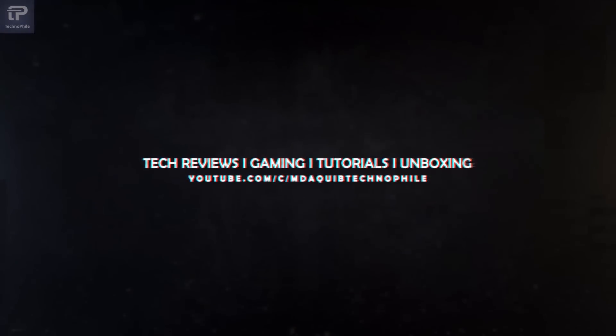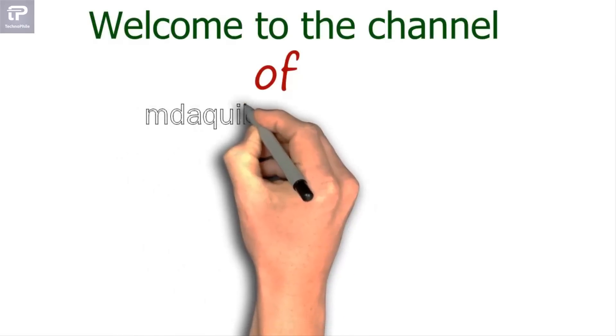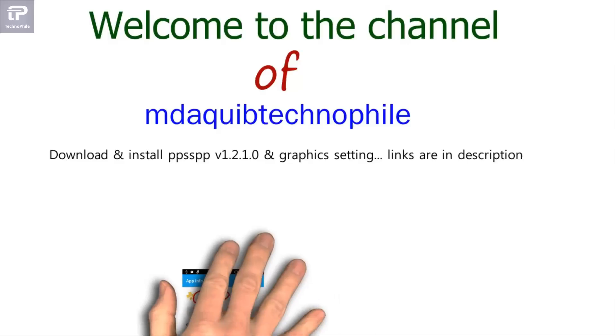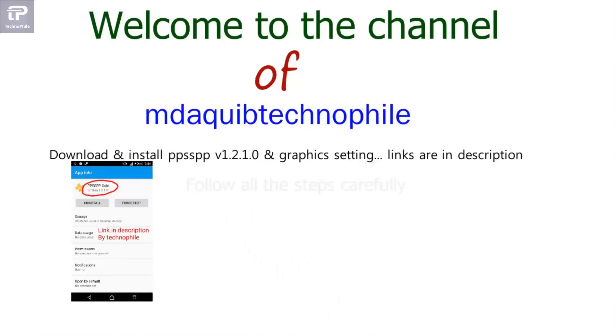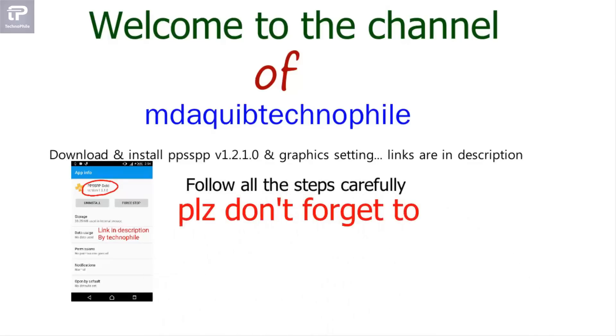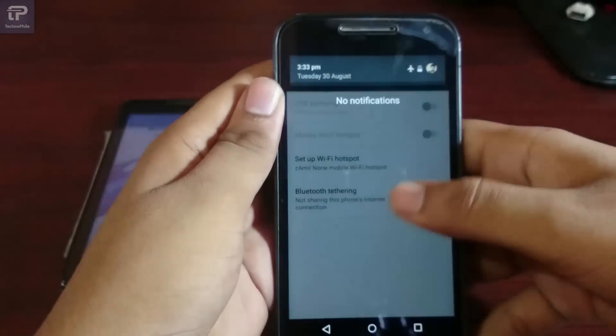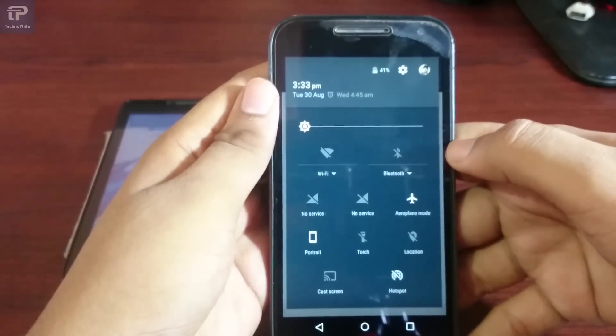Hello, I am Technophile, and today I'm going to show you an amazing tutorial on how to play PPSSPP multiplayer games in Android with your friends. So let's start. First, take a look at the pre-requisites. Please don't forget to like, subscribe, and share. Turn on the hotspot of your first phone.